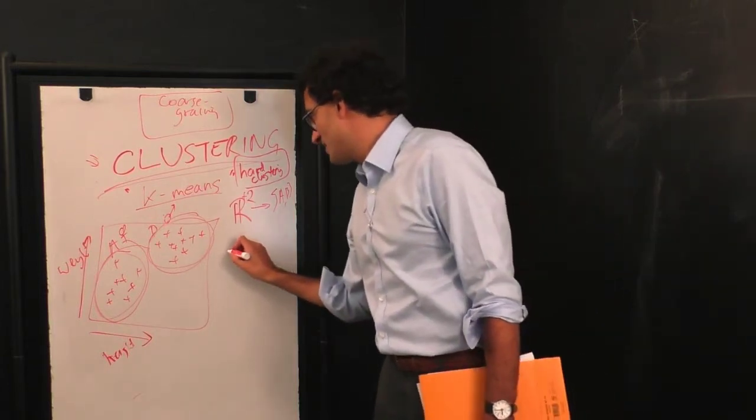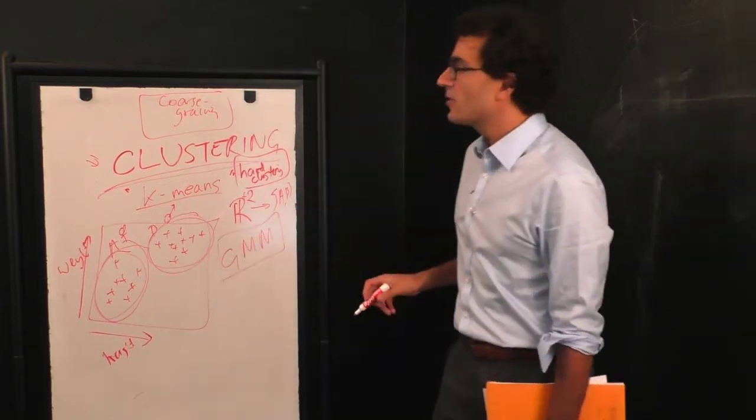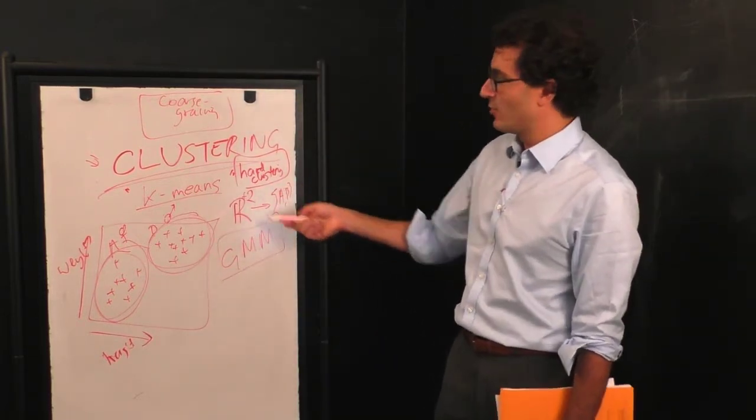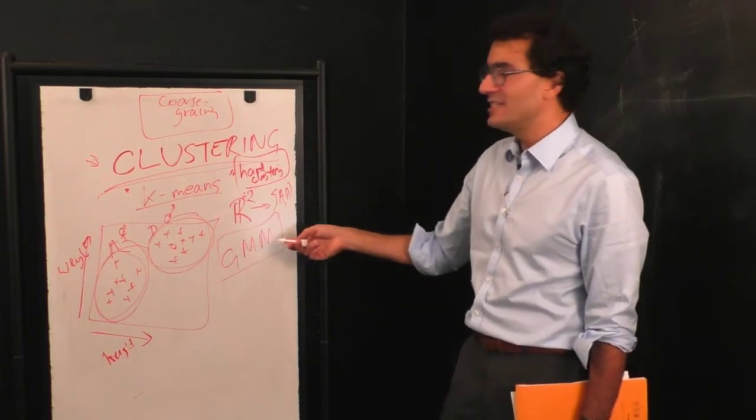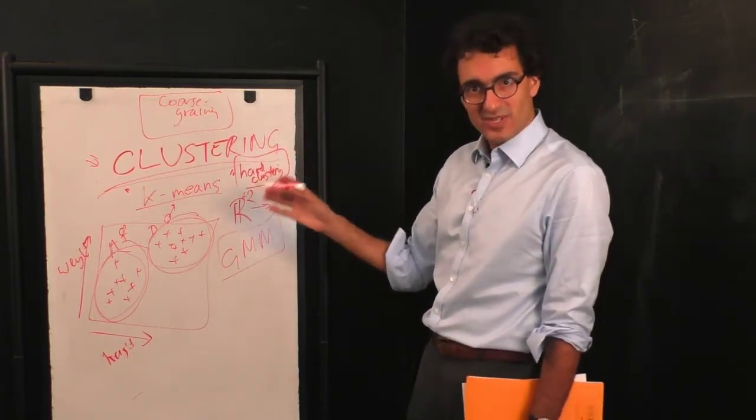There are other clustering algorithms that give what are called soft clustering, and the most closely related soft clustering algorithm to the k-means one is called the GMM, or the Gaussian mixture model. And, in fact, the GMM is very similar to k-means.